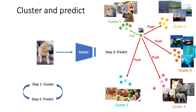Intuitively, the model is pushing the representations of the input image towards the center of the correct cluster while pushing it away from other clusters. If we consider each image as its own cluster, then we get another paradigm in SSL called instance discrimination or contrastive learning.